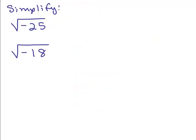Put the video on pause and try these two problems. The first thing we want to do is write that as square root of 25 times i. The square root of 25 is 5, so we have 5i. Be careful that you don't extend this square root sign over the i — then you'd be taking the square root of 25i, which is not what we want. It's just the square root of 25 times i.